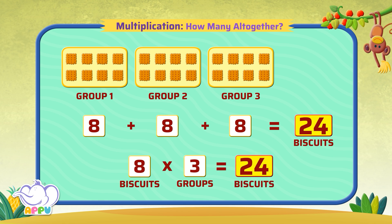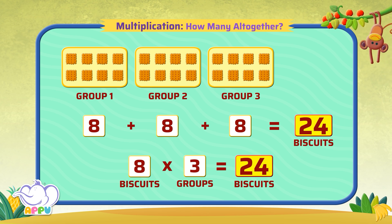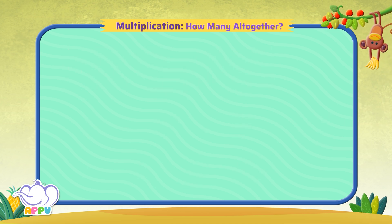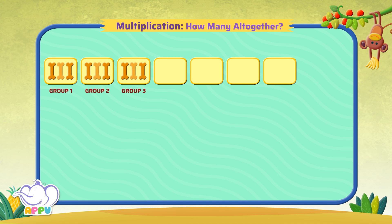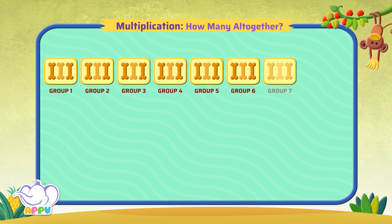Well done! There are 3 bones in each group, and there are 7 groups.